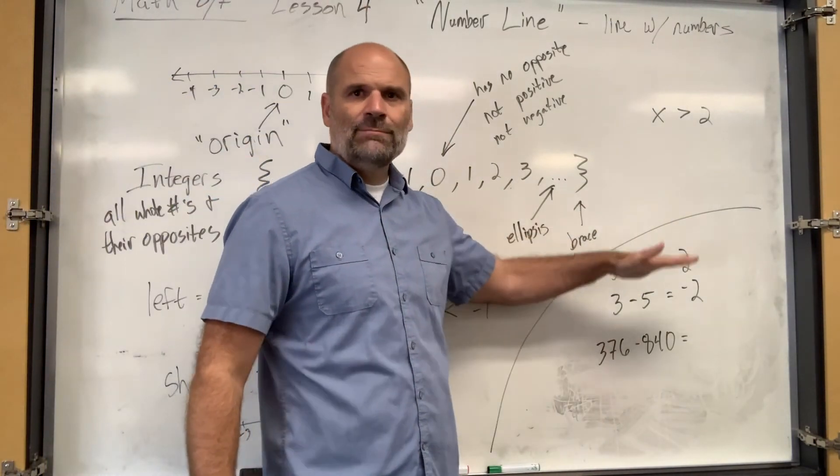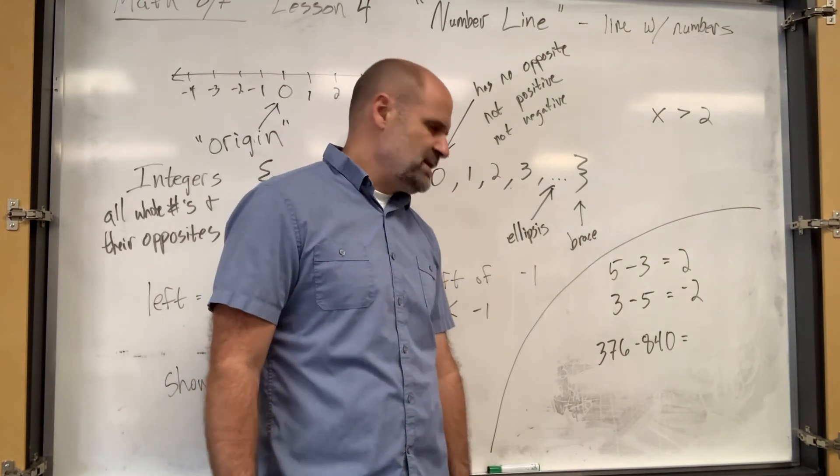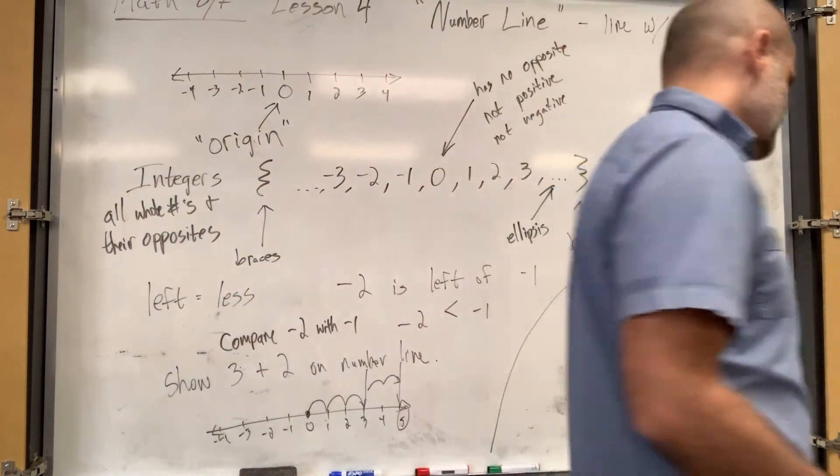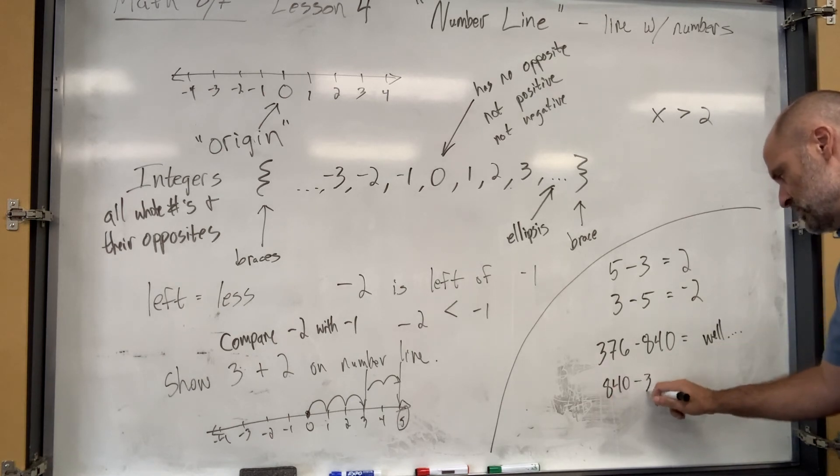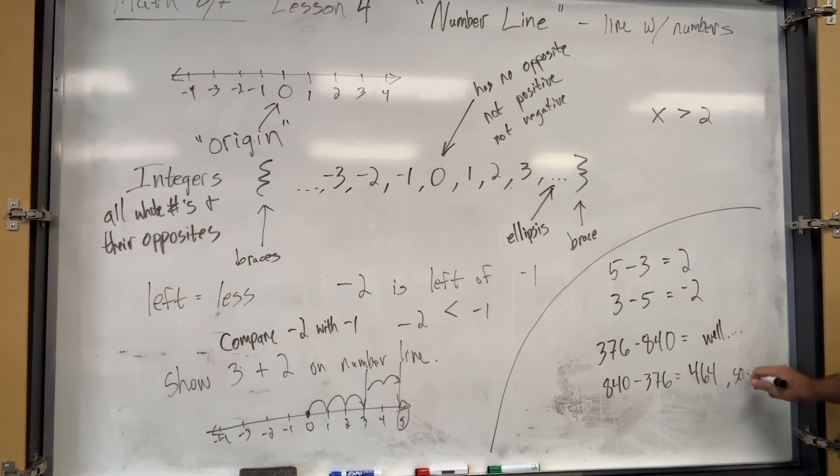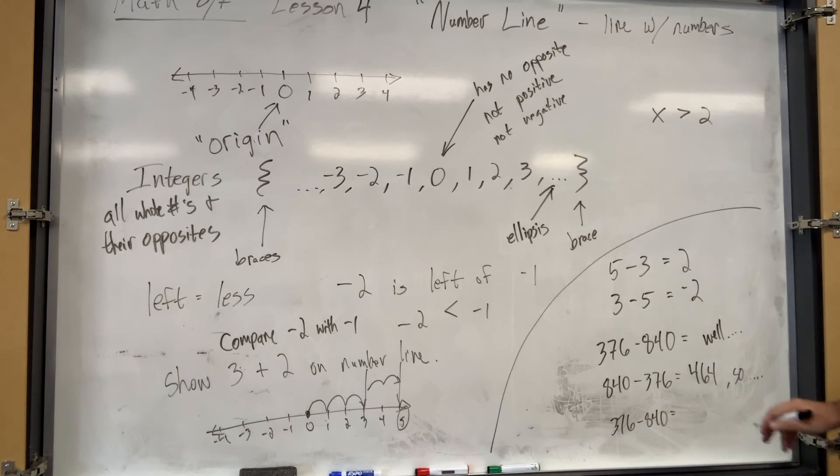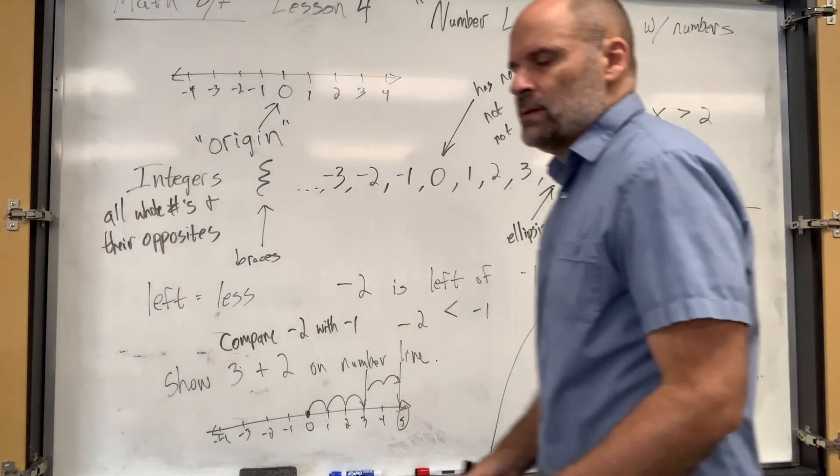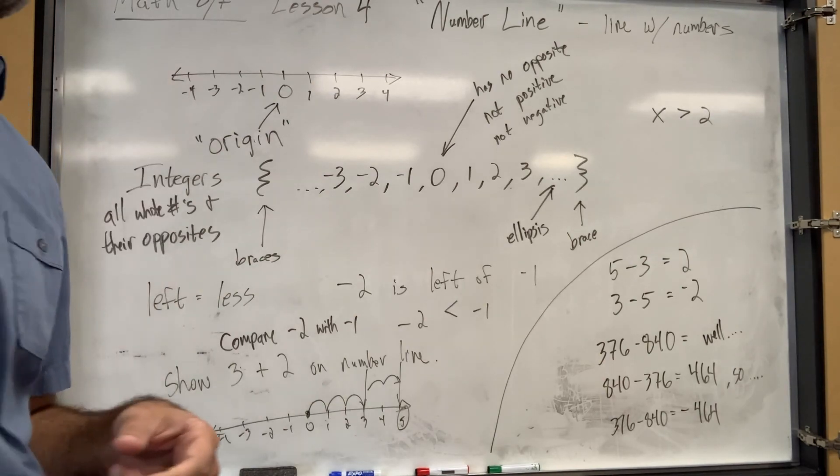You can't subtract 376 minus 840, right? What do you do? Do you switch them and you take your answer and you just add a negative one? Yes. So I'm going to put a well, which means let's do this first. 840 minus 376. Well, what does that equal? Cheating, cheating. 464. So another dot, dot, dot or ellipses. So this must be 376 minus 840 has to equal what answer? Negative four. Negative 464. Okay. So whenever you're asked to subtract the impossible, reverse the subtraction problem and then throw a negative on it. Okay. Pretty simple, right?